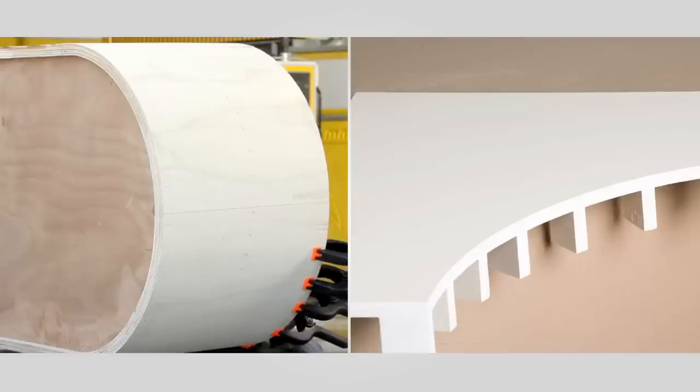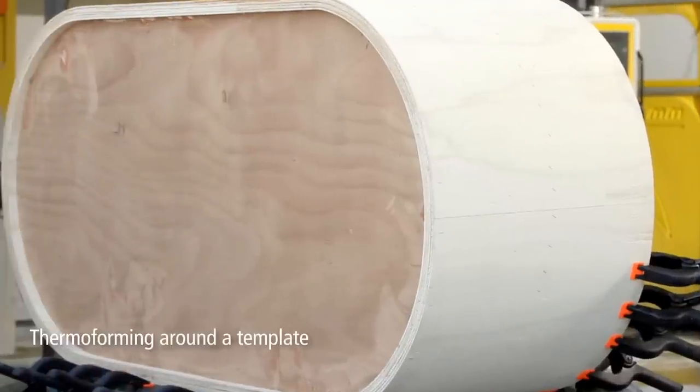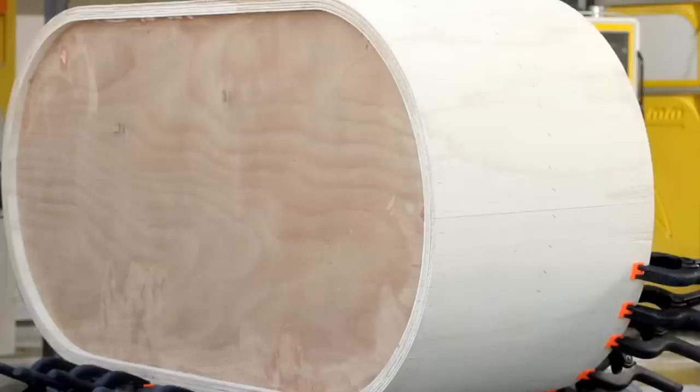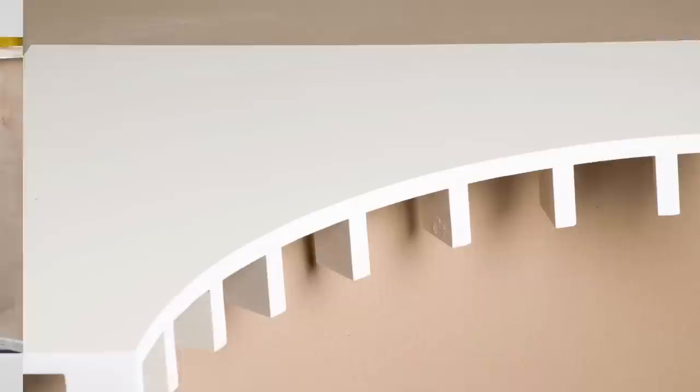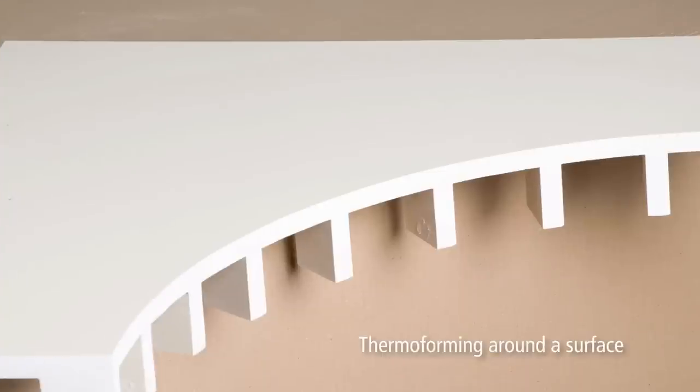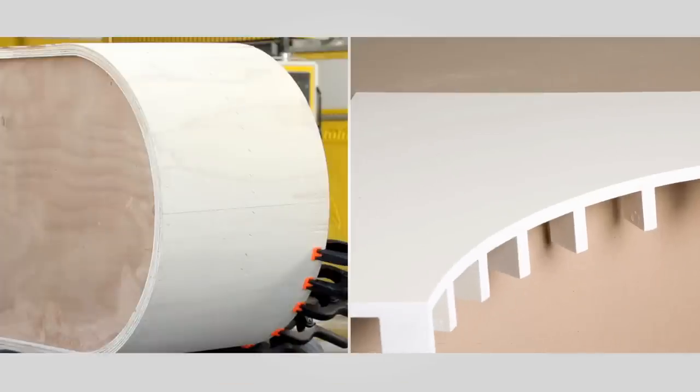One method is thermoforming around a template, for which you will need to prepare a template in advance out of wood or another suitable material. The second method is thermoforming around a surface. For both methods, the preparations are the same.